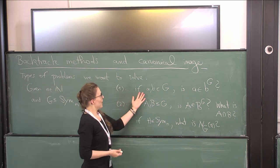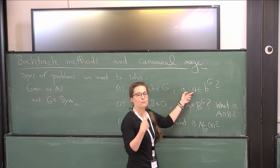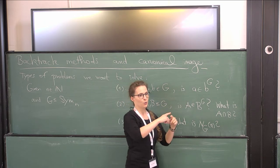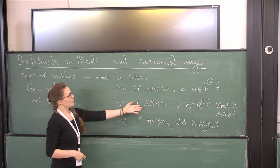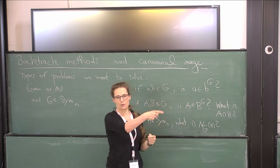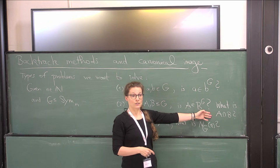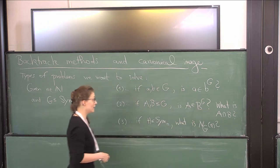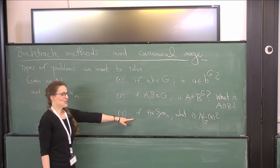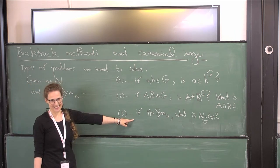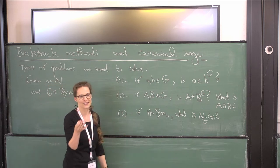For example, you have two elements of your group G and you want to know whether or not they are conjugate. And probably if they are conjugate, you also want to have a conjugating element. Similarly, you have subgroups and you want to know whether they are conjugate with a conjugating element if possible. Alice already mentioned group intersection — that's another problem we want to solve quickly.